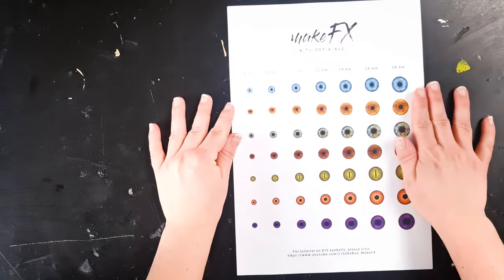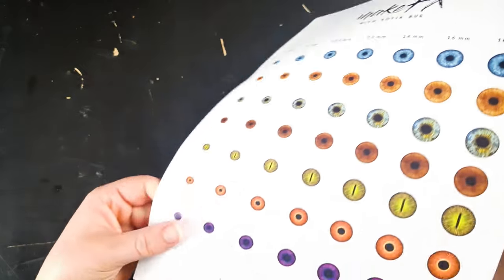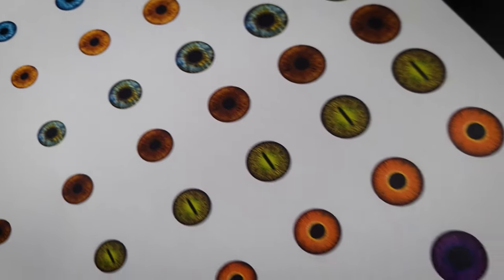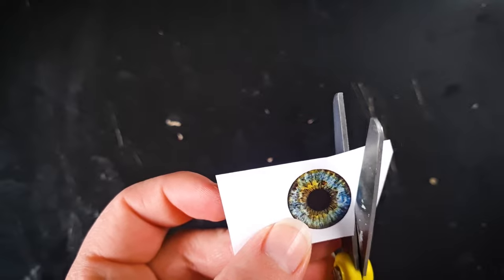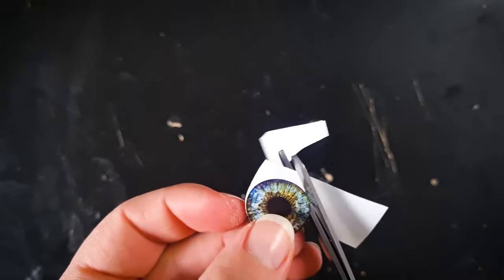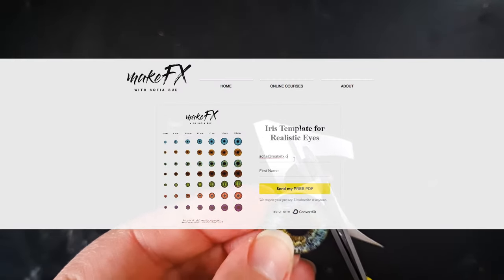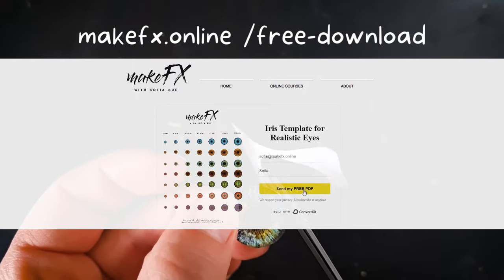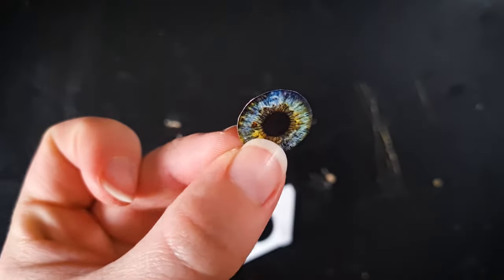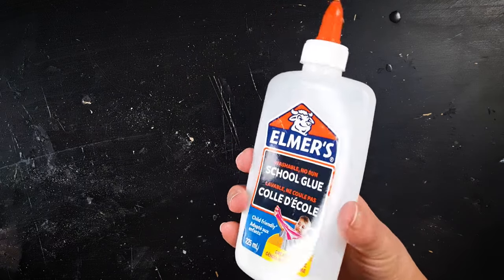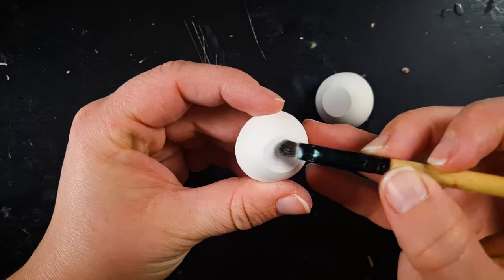For this step I've actually prepared a little iris printout for you. It has both creature and human eyes in six different sizes. You'll be able to download the free PDF via my website makefx.online. Once you've cut out the design you want you'll need a bit of PVA glue to tack the iris onto the flat surface.